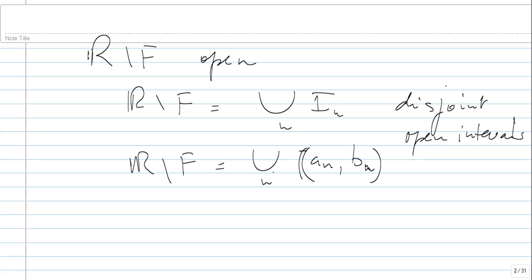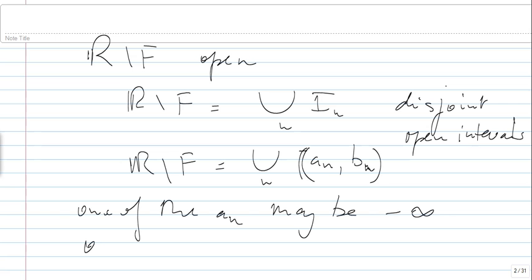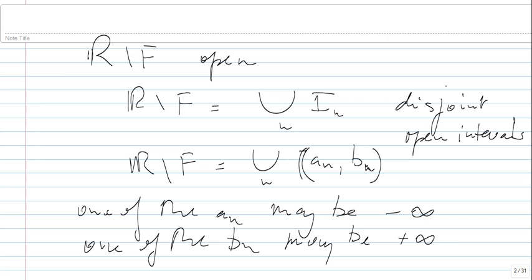The idea is simple: the Aₙs and Bₙs are in F, assuming of course that they are finite numbers — because one of the Aₙs may equal minus infinity and one of the Bₙs may equal plus infinity. If the Aₙs and Bₙs are finite numbers, they belong to F because they are not in the complement. So the function f is defined on capital F, and now we need to define G outside.